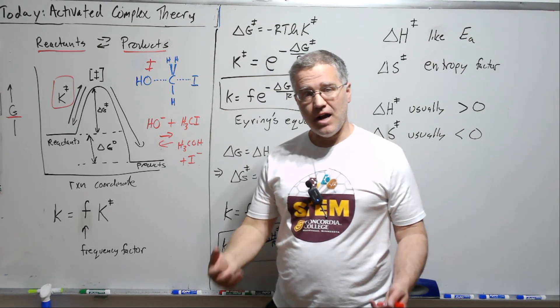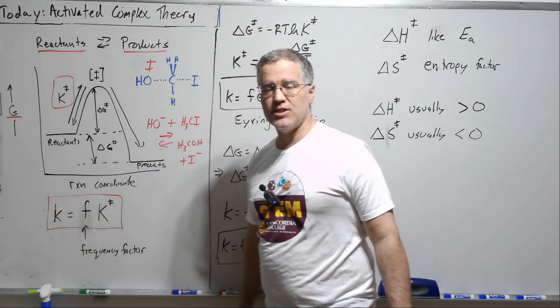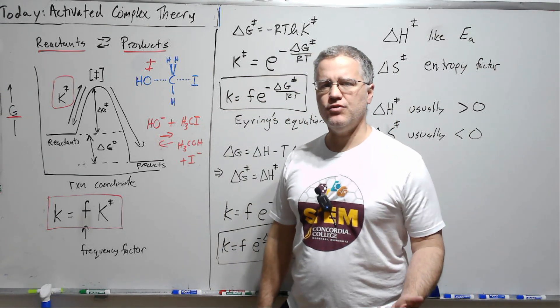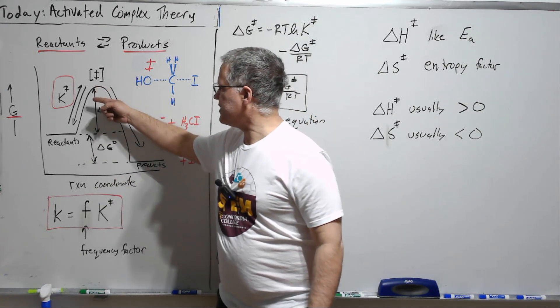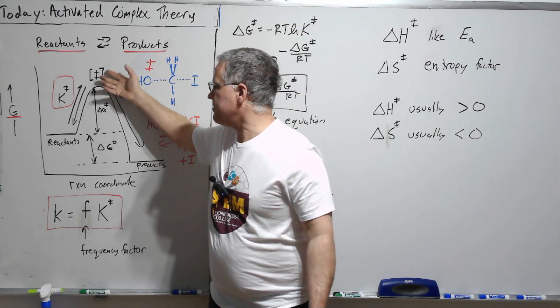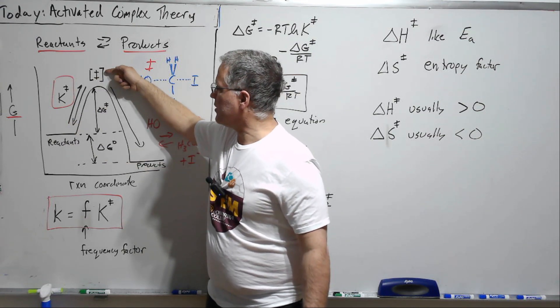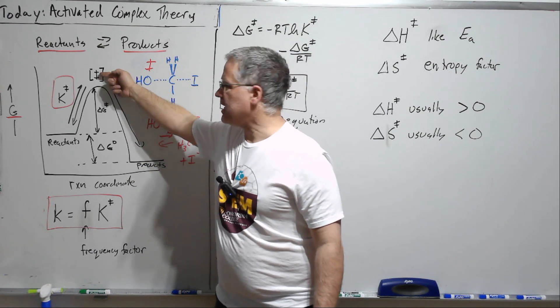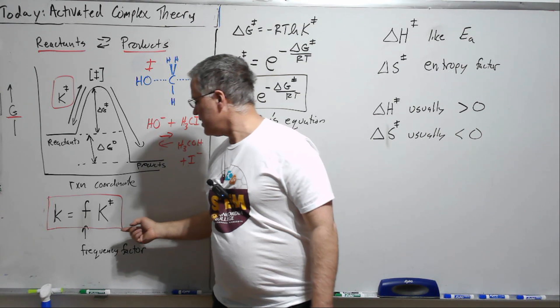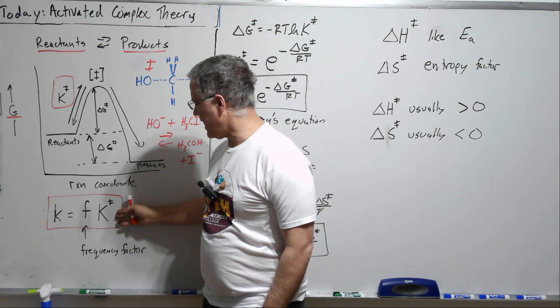Then activated complex theory says that the rate constant is proportional to this equilibrium constant. And that makes some intuitive sense. If the equilibrium lies, if we're making a lot of this or a reasonable amount of this, the equilibrium is always going to lie this way towards reactants. But if we're making a reasonable amount of this then we'll be making more product. If we're not making this in this equilibrium condition very much then we won't make much progress. So it makes sense that the rate constant should be proportional to the K double dagger.